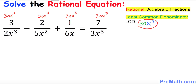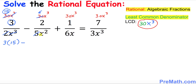Now simplify the fractions. For the first term: 2 goes into 30 fifteen times, and x cubed over x cubed cancels, giving 15. So we have 15 times 3. For the second term: 5 goes into 30 six times, and x cubed over x cubed reduces to x, giving 2 times 6x.